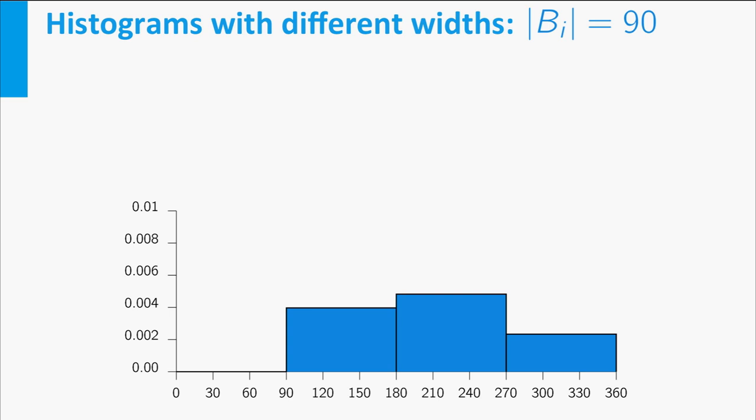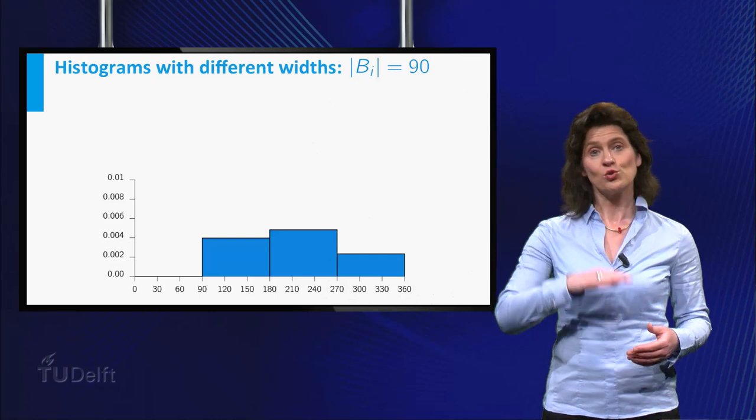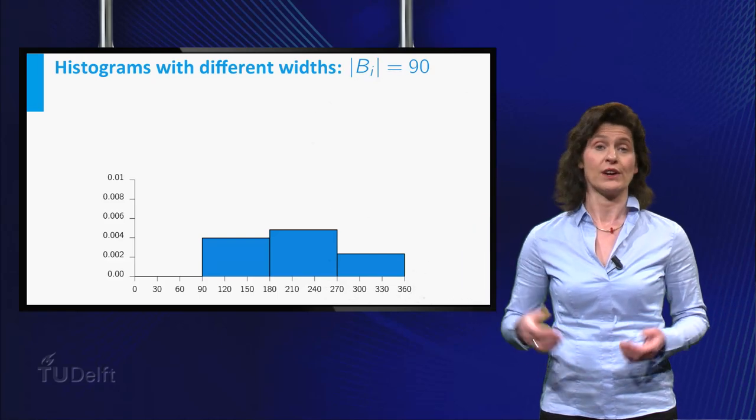You see that the shape of the histogram changes and information about your dataset might get lost. For example, if you take the width too large, the fact that there are two peaks in the dataset is not visible anymore.